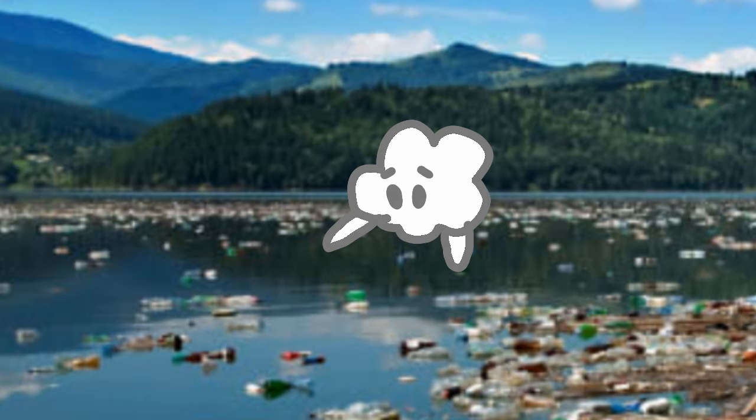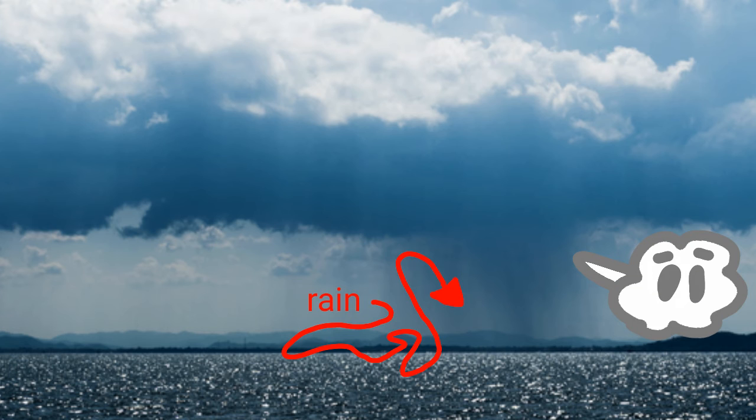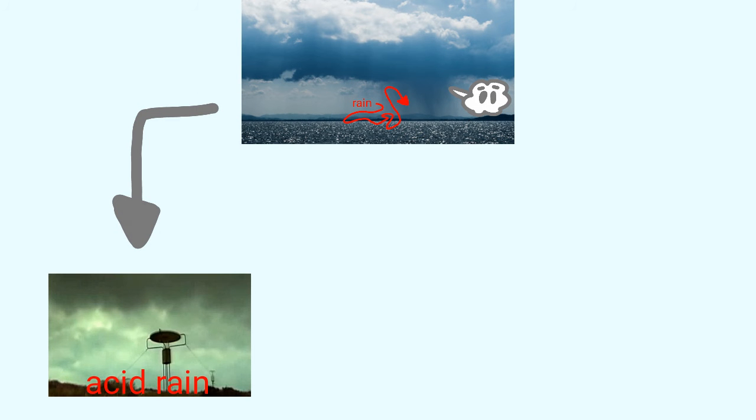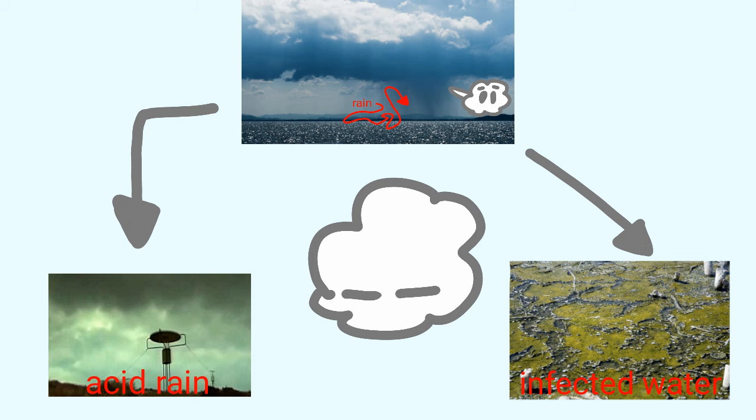The pollution ends up getting into the water, which gets into the clouds, and when it precipitates, it can become multiple things like acid rain. It can make our water all infected and gross, and it's all really bad.